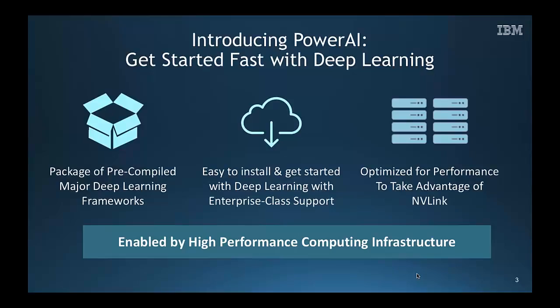Simple to install, easy to download. With that installation, you're ready to begin training on the fastest accelerated system for deep learning in the enterprise — the IBM SA22LC for HPC. It's really optimized for the interconnection within this server node, NVLink.